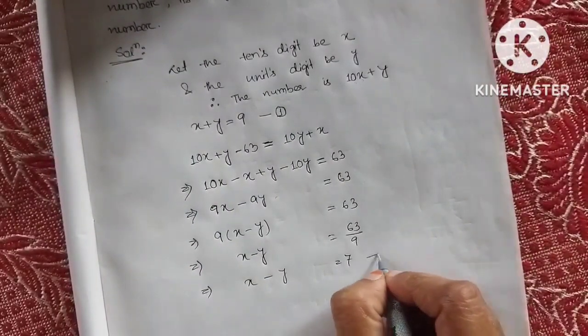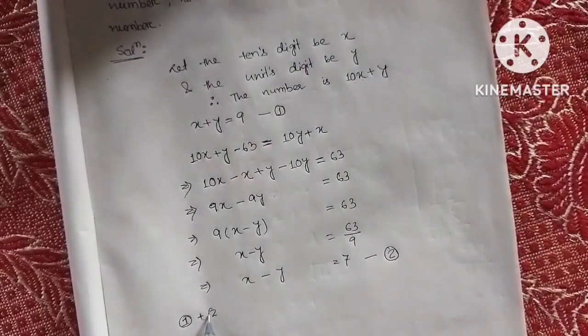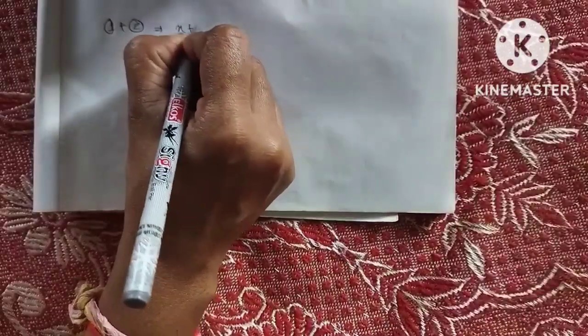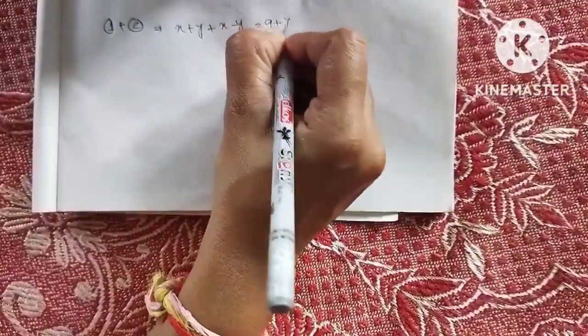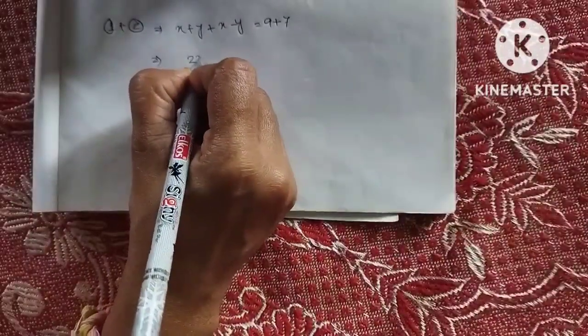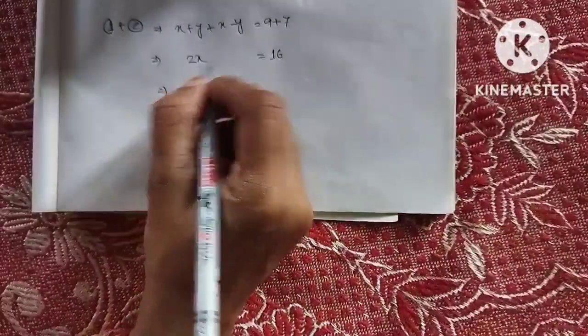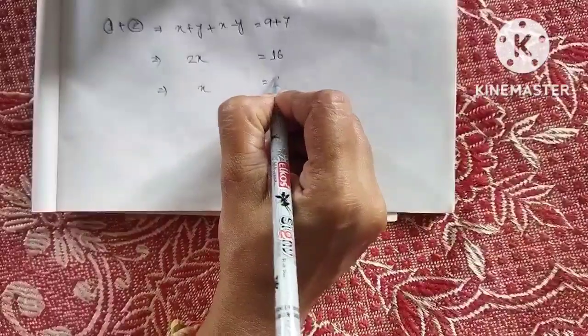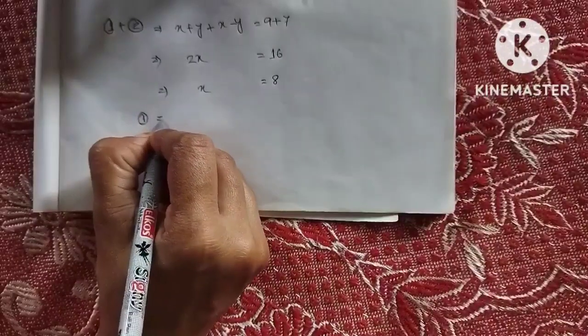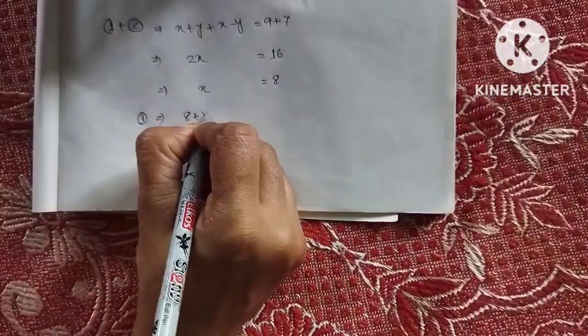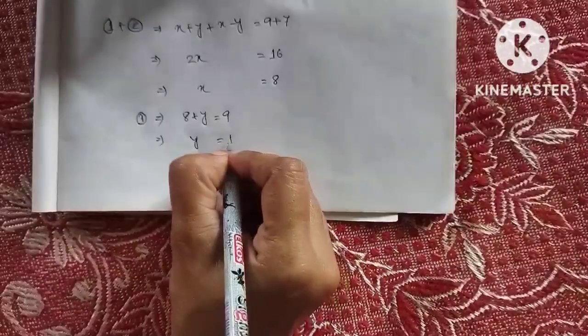Now adding equation 1 and equation 2, we can solve for the variables. Adding them gives us 2x equals 16, so x equals 8.